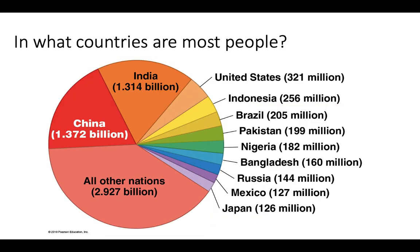Today, more than half the population is found in just 11 different countries, with China and India having the most. Everybody else — all the remaining countries — make up about the other 3 billion. We're working out of a total of about 7.8 billion, so India and China alone make up more than one-third of the whole population. So these two are the behemoths.